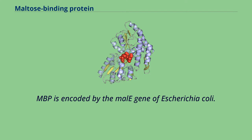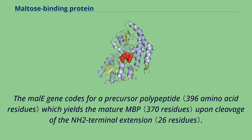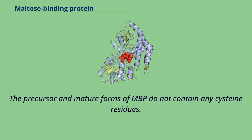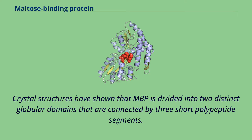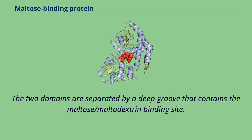MBP is encoded by the malE gene of Escherichia coli. The malE gene codes for a precursor polypeptide which yields the mature MBP upon cleavage of the NH2 terminal extension. The precursor and mature forms of MBP do not contain any cysteine residues. MBP is a monomeric protein. Crystal structures have shown that MBP is divided into two distinct globular domains connected by three short polypeptide segments, with the two domains separated by a deep groove containing the maltose-maltodextrin binding site.